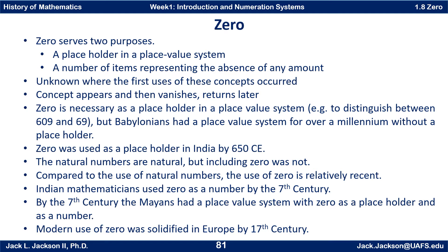Indian mathematicians also used zero not only as a placeholder, but as a number in and of itself, at least by the 7th century. Also by the 7th century, the Mayans, independently over in the Americas, had a place value system with a zero that operated both as a placeholder and as a number. The Mayan culture had the concept of zero as early as probably the Indians — more or less about the same time.